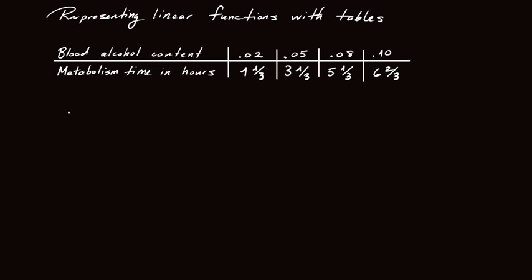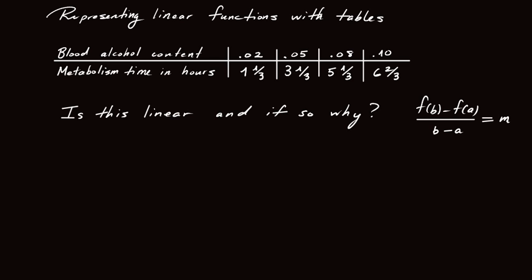So how do we check whether it's a linear function? Linear functions are functions whose average rate of change is constant. That is, for no matter what b and a we choose, we're always going to get the same number m. So to check whether this is a linear function, we just have to check that the average rate of change formula holds no matter what b and a we choose.